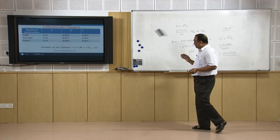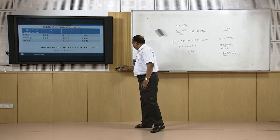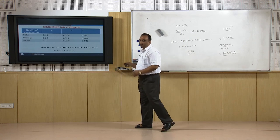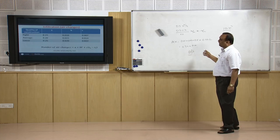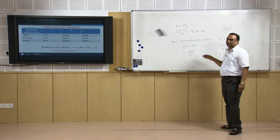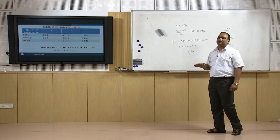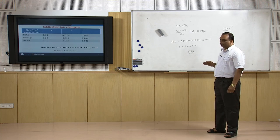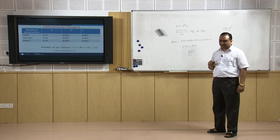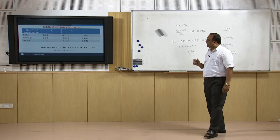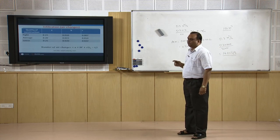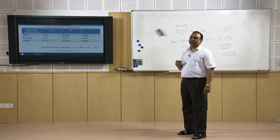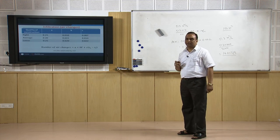Infiltration is an undesired phenomenon in a building, but it cannot be completely avoided — it can only be reduced to a certain extent so that the cooling load on the cooling coil is minimized. With this, I conclude this lecture. In the next lecture, we will take up the design conditions in a building. Thank you very much.